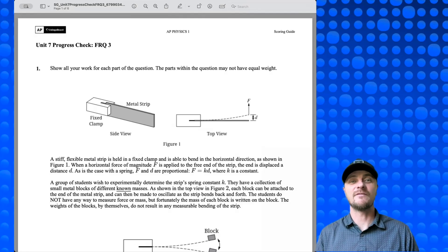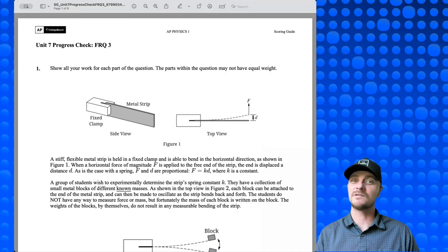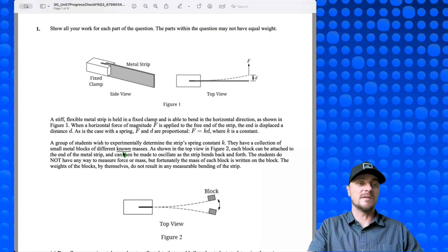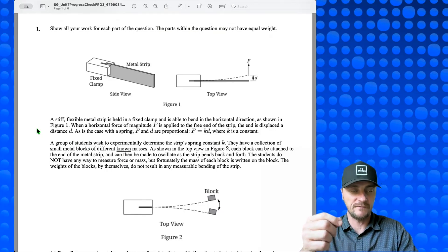Well, we made it to Unit 7 FRQ3 from the AP Classroom Progress Checks. I'm Mr. Heinrich. Great to see you AP Physics 1 students. Let's check out the system.